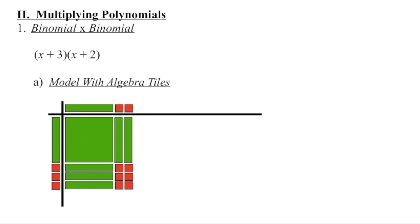We end up with 1x squared, 5 positive x's, and 6 little ones.